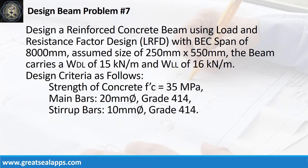Design a reinforced concrete beam using load and resistance factor design, with both ends continuous, span of 8,000 mm, assumed size of 250 mm x 550 mm. The beam carries a uniform dead load of 15 kN per meter and uniform live load of 16 kN per meter. Design criteria are as follows.